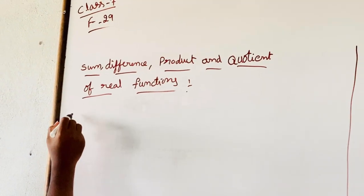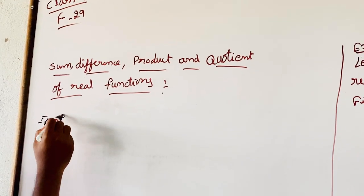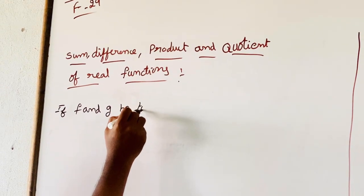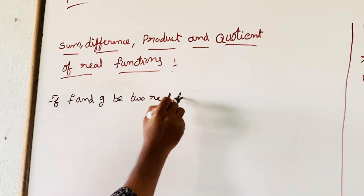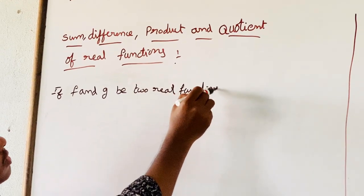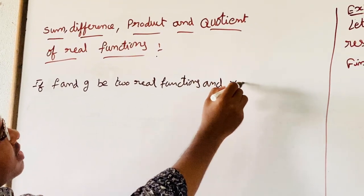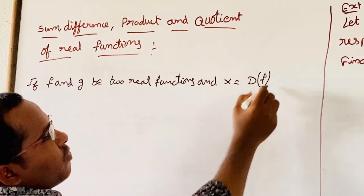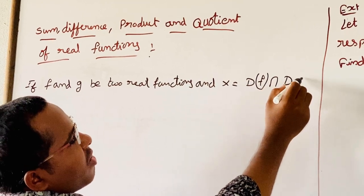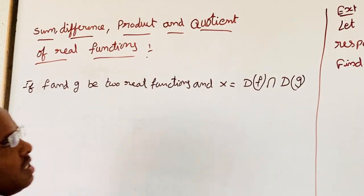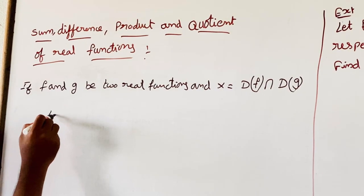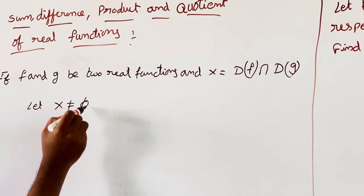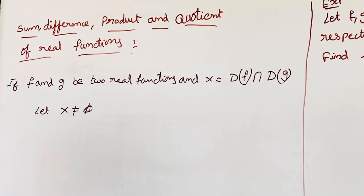First, if F and G be two real functions, then X is defined as the domain of function F intersected with the domain of function G. So let X not be equal to the null set.